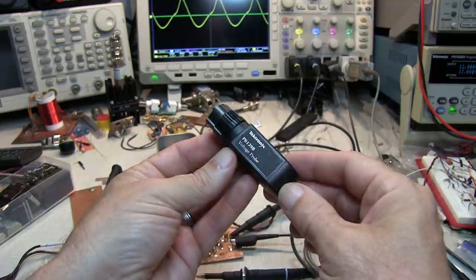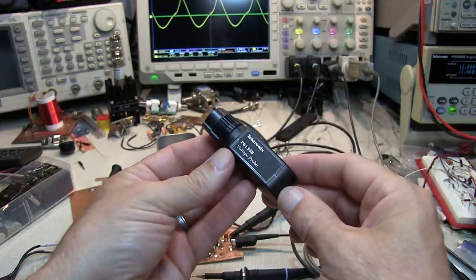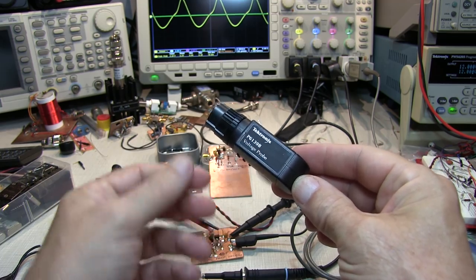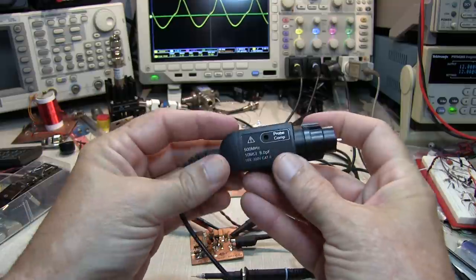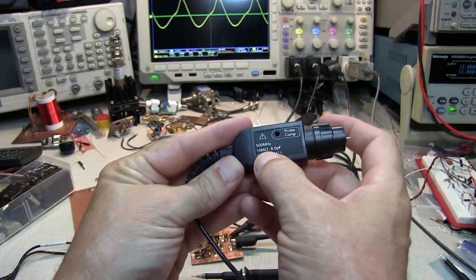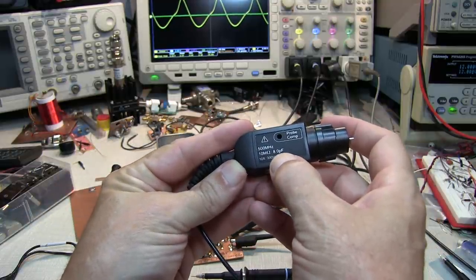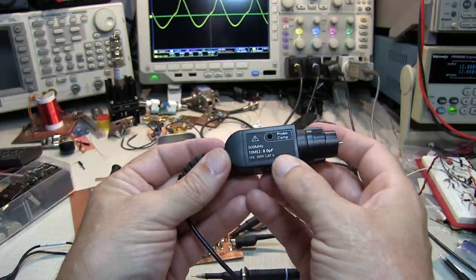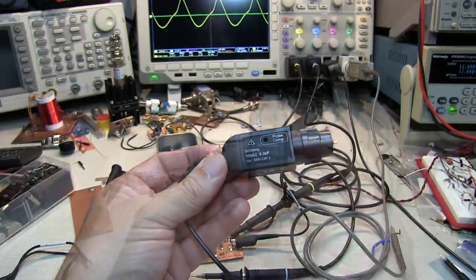Now, the vast majority of 10x probes kind of top out at 500 MHz, kind of like this P6139. If we take a look at the specs for the P6139, you have 500 MHz, 10 megaohm, and 8 picofarads of loading. And again, that's pretty typical and pretty low capacitance for a 10x probe.